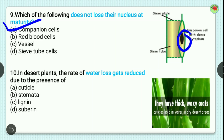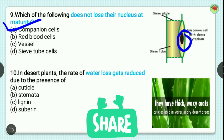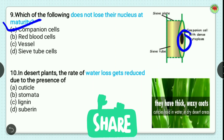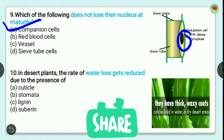Question number 10: in desert plants, the rate of water loss gets reduced due to the presence of? Options are cuticle, stomata, lignin, and suberin. In desert plants, the rate of water loss is reduced due to the presence of cuticle. The cuticle is a structure present in desert plants which prevents water loss. So the correct option is A, cuticle.